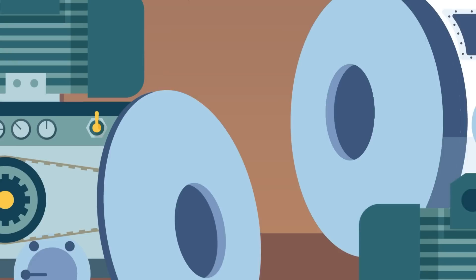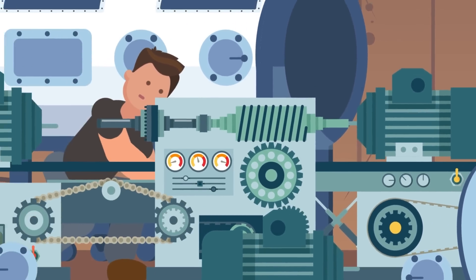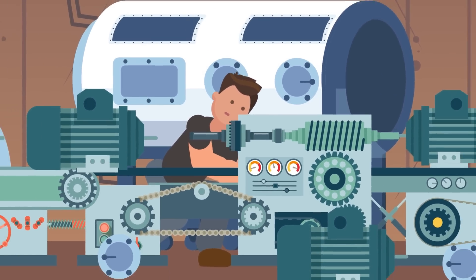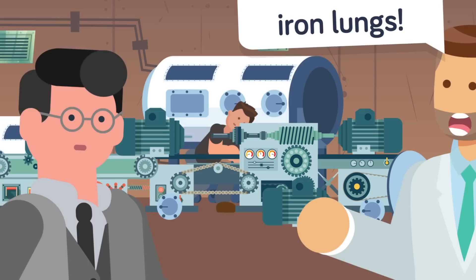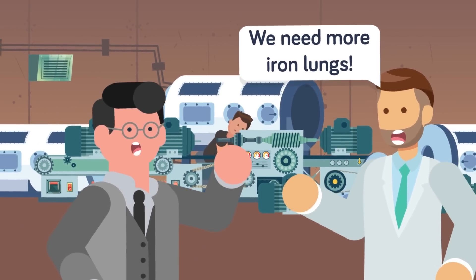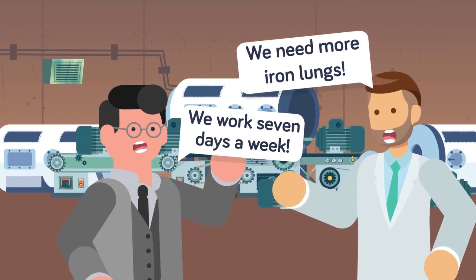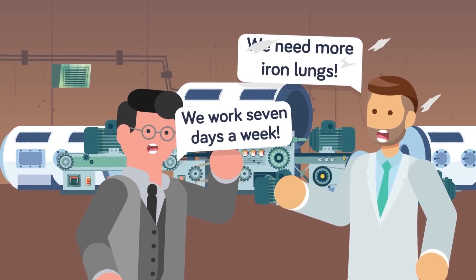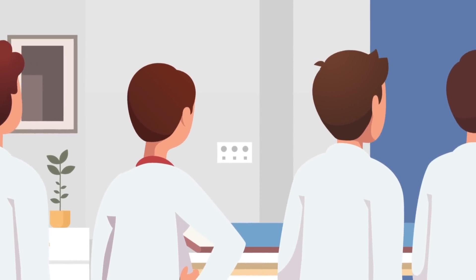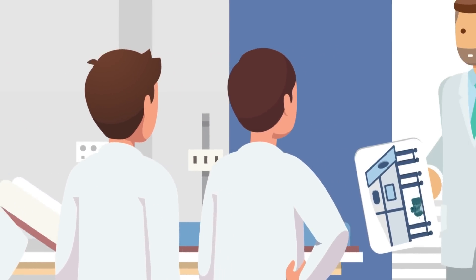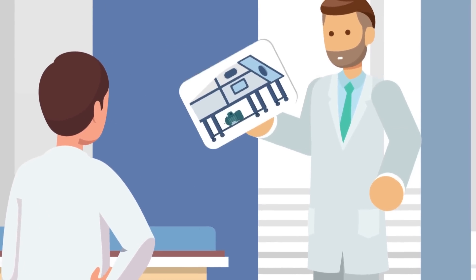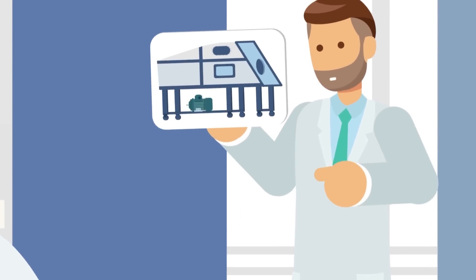Now at first, the adoption of iron lungs into hospitals was nowhere near as widespread as their usage would later become. After all, Drinker and Shaw could hardly mass-produce enough of their newly designed ventilators to meet the demand created by such a widespread epidemic. So, as a result of this, many hospitals had to first create improvised iron lungs with the materials that were available to them before the large-scale manufacture of the apparatus began.